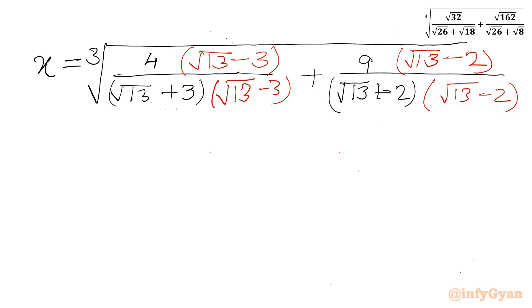Now denominator is forming one algebraic identity as you can see a plus b times a minus b. So we can write a plus b times a minus b, it will be equal to a square minus b square.